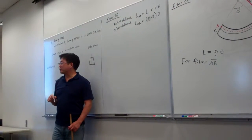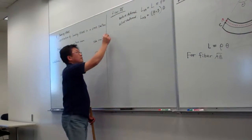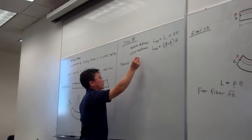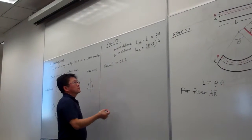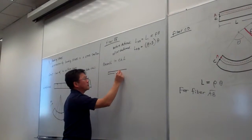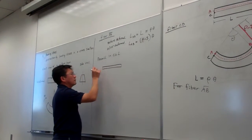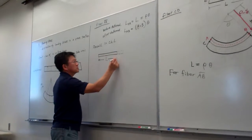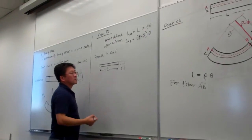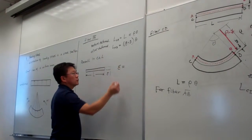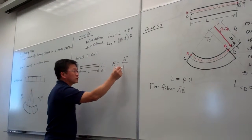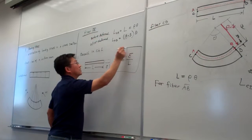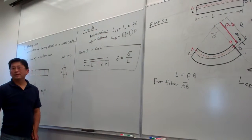Going back to Chapter 1 where we defined strain: if we have loading and the corresponding deformation, and the original length is L with deformation delta, we defined strain as deformation divided by original length. We pick up this formula and apply this concept here to study the strain.